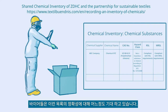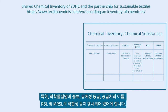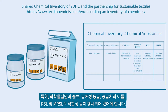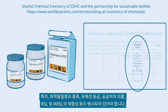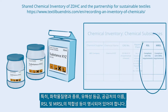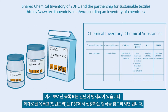Be aware that your buyers may have specific expectations regarding the format of such an inventory. Typically, the chemical inventory should indicate the name and type of chemical substance, the hazard and hazard class, the name of the chemical supplier, and the level of conformance to RSL and MRSL. The shown inventory is strongly simplified. For an example of an actual inventory, check the inventory format recommended by the Partnership for Sustainable Textiles above.